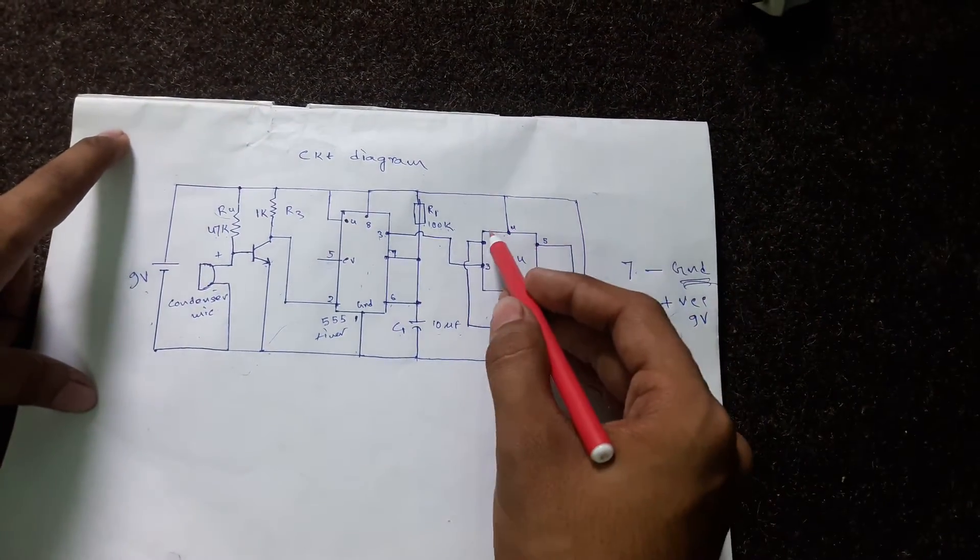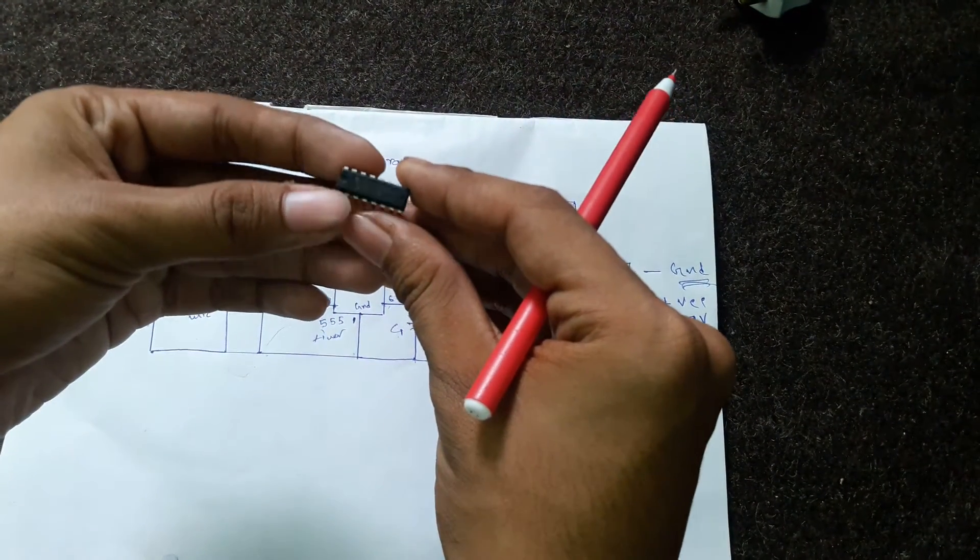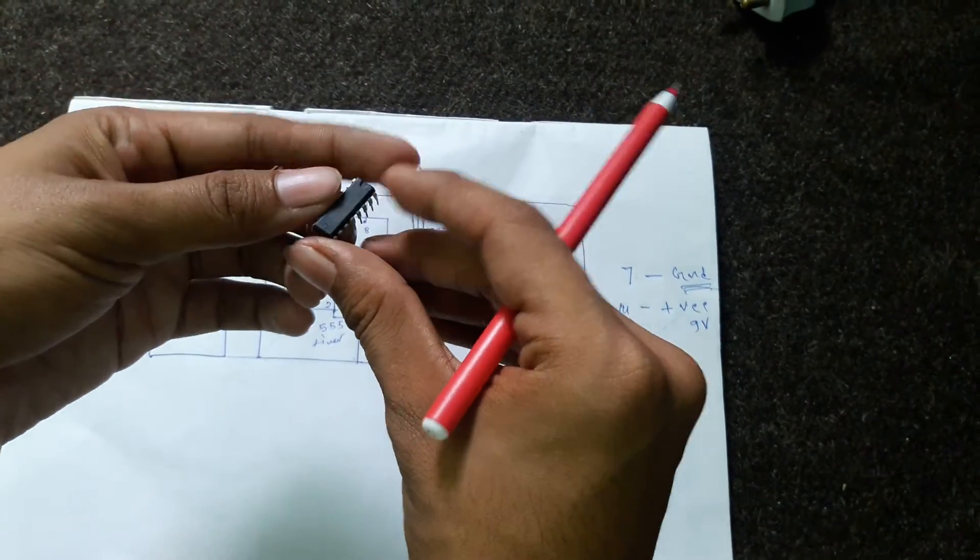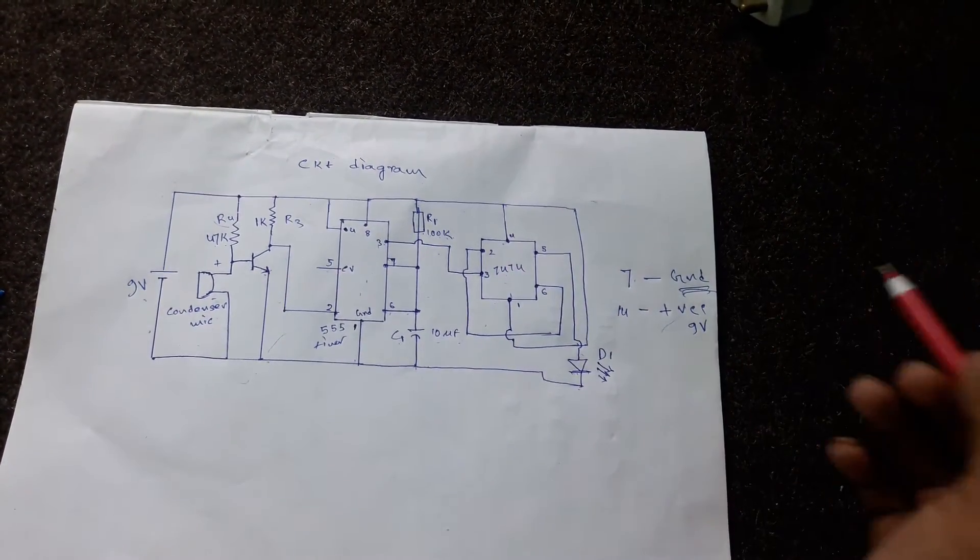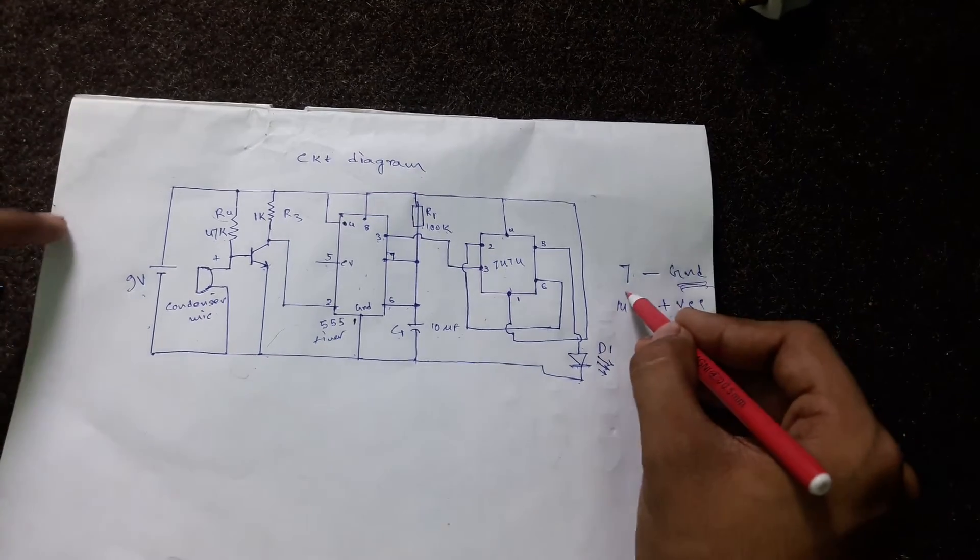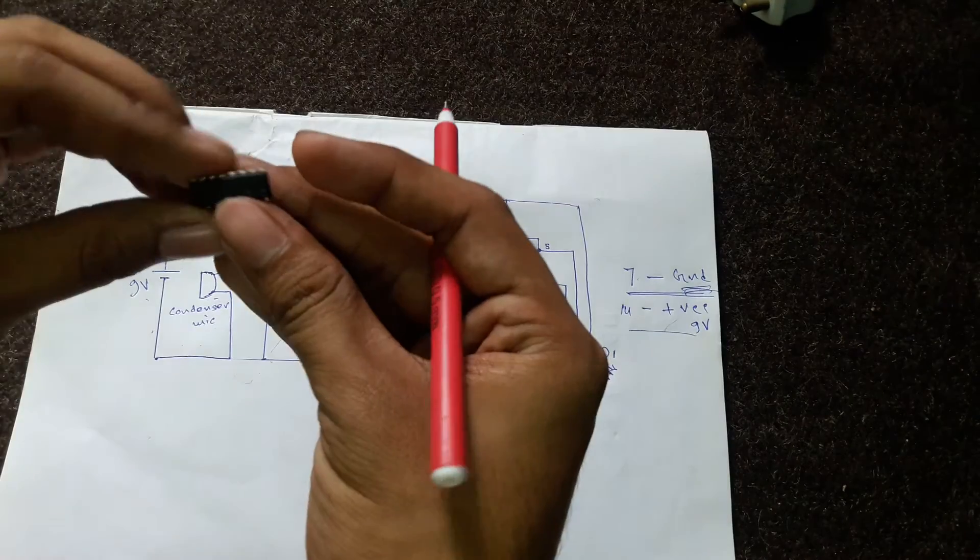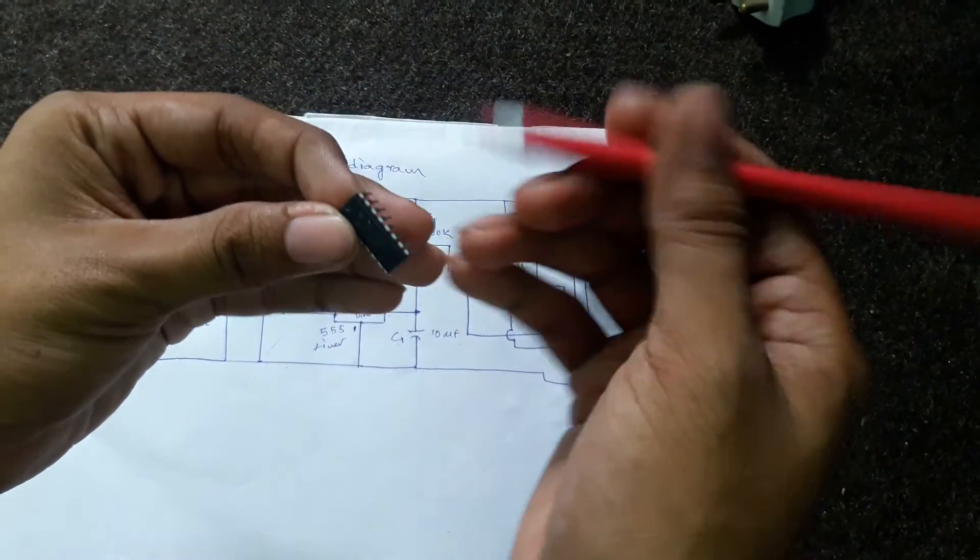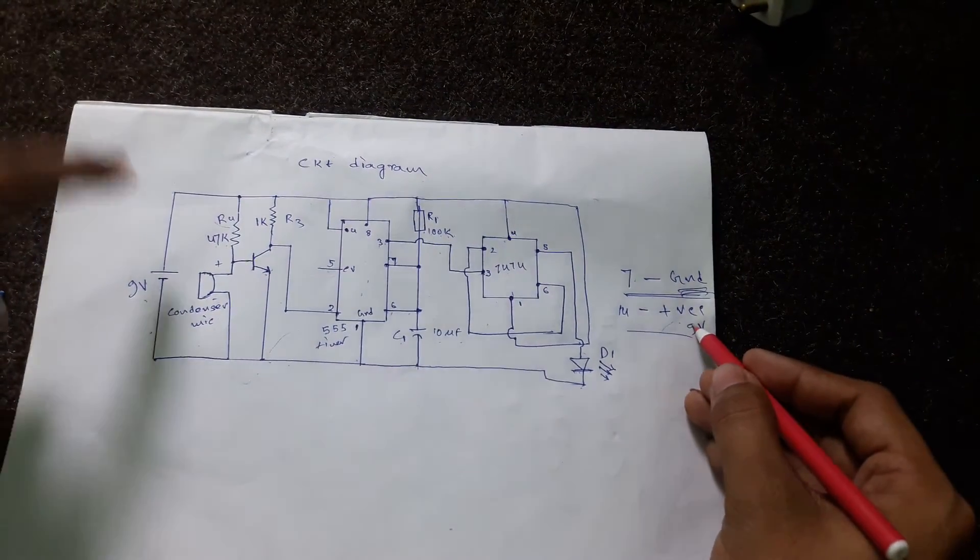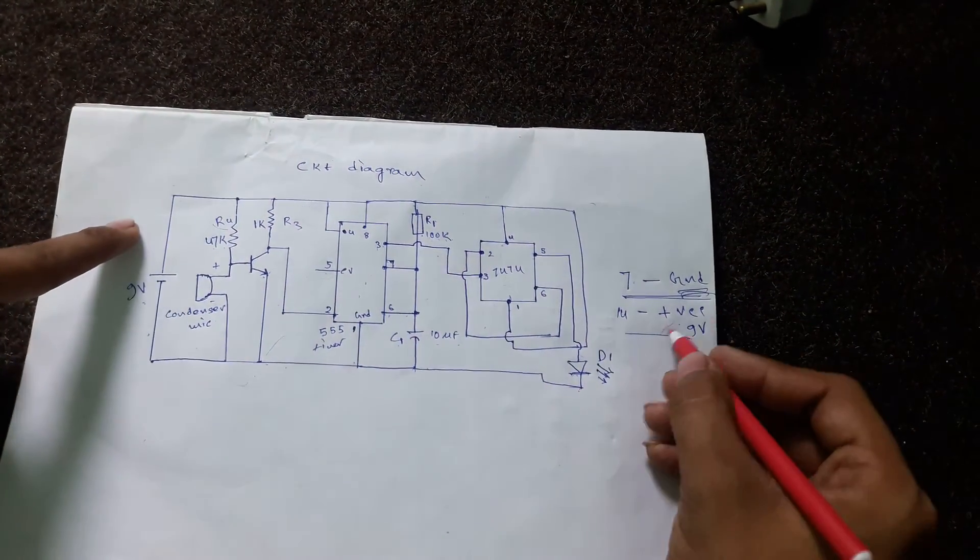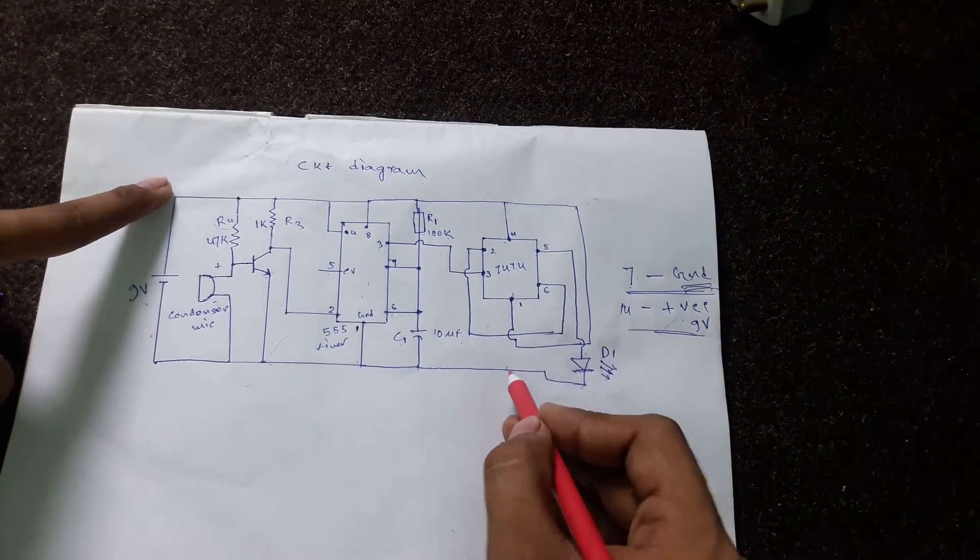The IC has 14 pins, but for convenience we're only mentioning the ones in use. Be careful with pins 7 and 14. This is the notch - this side is pin 7 and this side is pin 14. Pin 14 should be connected to plus VCC and pin 7 will be grounded.